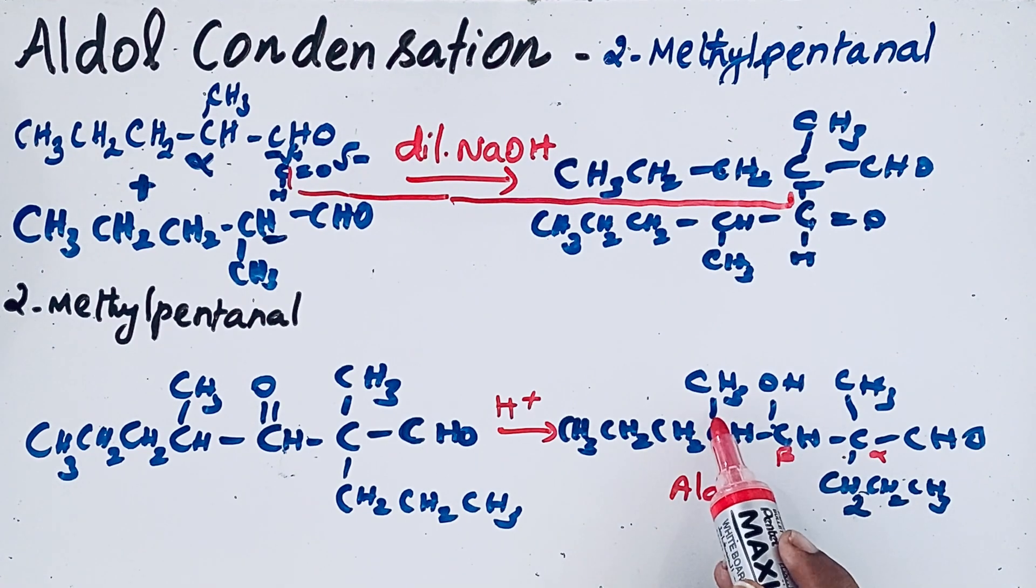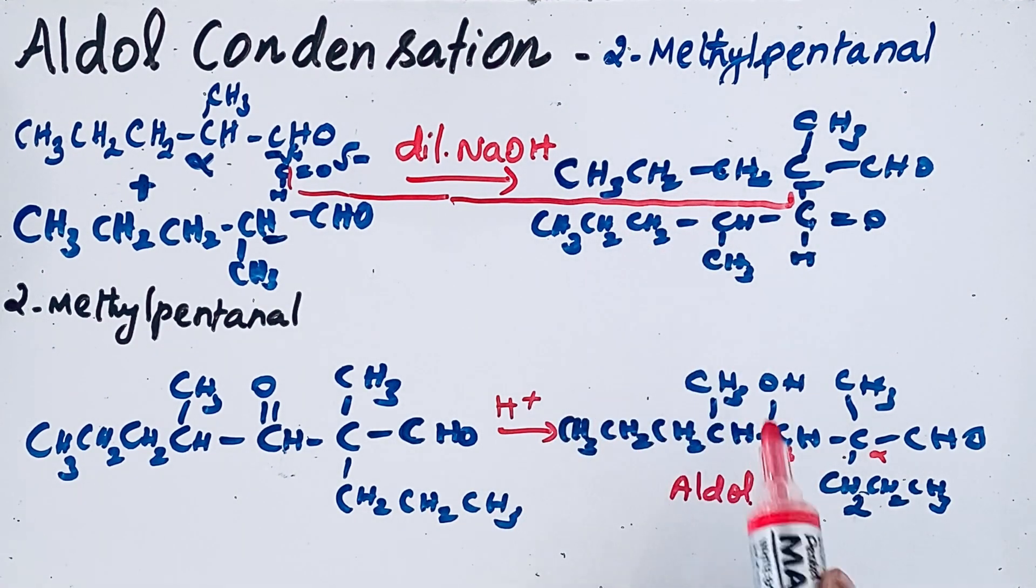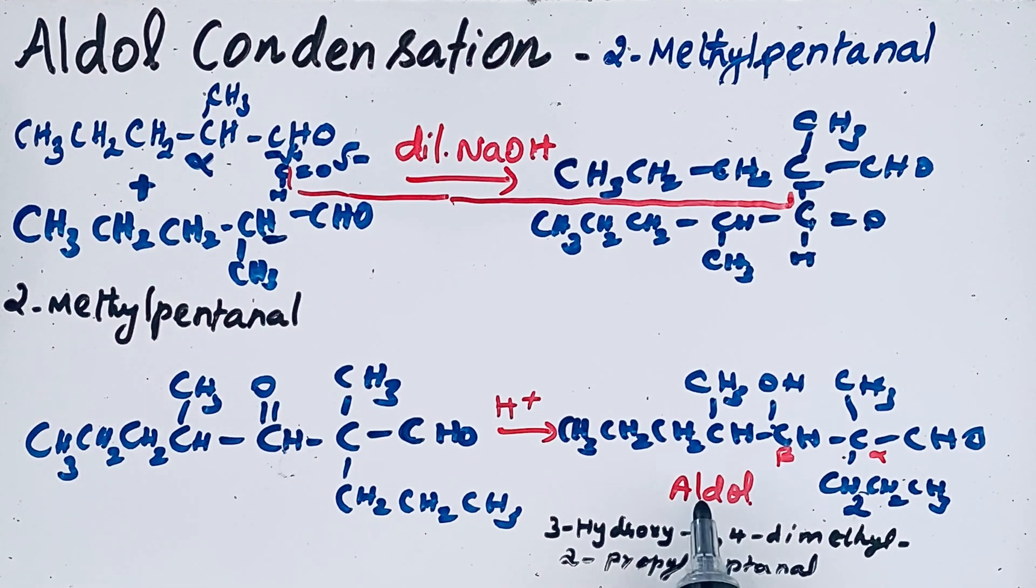So this compound, that means 2-methyl pentanal, will undergo aldol reaction. But it will not give that aldol condensation product. So the product formed by that aldol reaction is 3-hydroxy-2,4-dimethyl-2-propyl-heptanal. So this will not give that aldol condensation product.